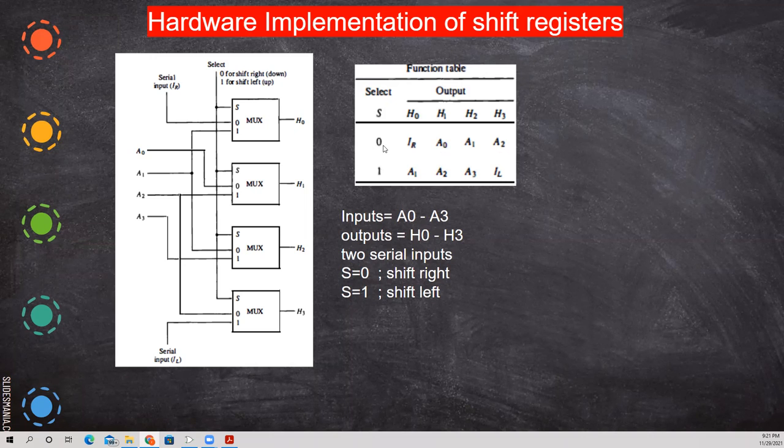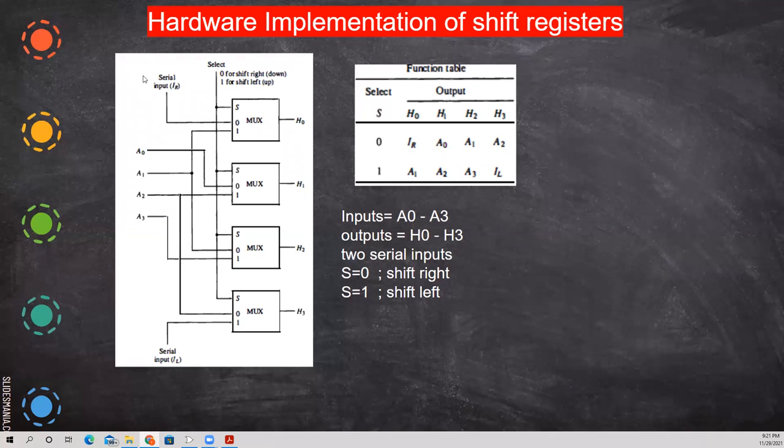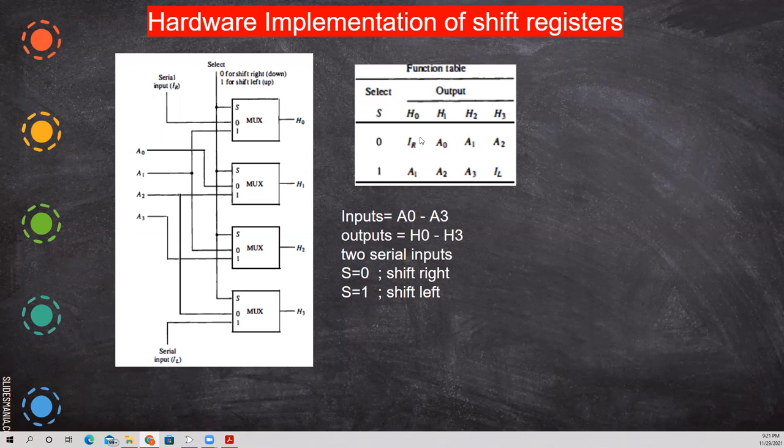So that is what here it is given. When S0 is zero, it is shifted right. See here, the input from this serial input, that is this IR goes there. And then A0 in H1, initially H0 is having A0, H1 is having A1 and so on. But after shifting right, here the bit enters from this serial input and then H0, whatever the data, the output is nothing but the A register.